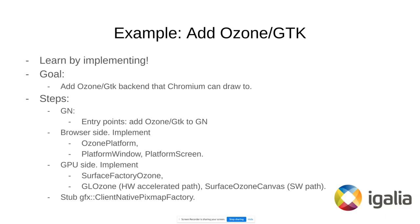For the GPU side we need to implement the SurfaceFactoryOzone — that's basically the class that tells the client what kind of GL implementations are available, or if not, it can also create a surface canvas for client drawing. If you want the hardware-accelerated path enabled you need to implement GLOzone, otherwise implementing the surface canvas is more than enough. We also need the NativePixmapFactory, which is needed to create native pixmaps — like in Wayland we use libgbm to create these pixmaps.